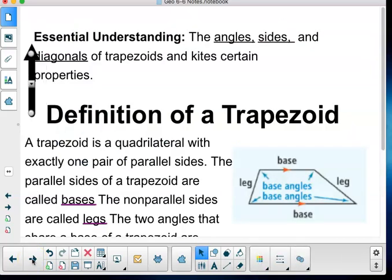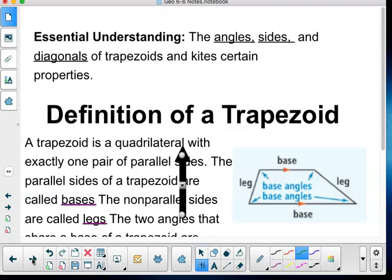So now, our essential understanding: the angles, sides, and diagonals of trapezoids and kites have certain properties. The essential understanding is that the angles, sides, and diagonals of trapezoids and kites have certain properties. So we need the word have in here.